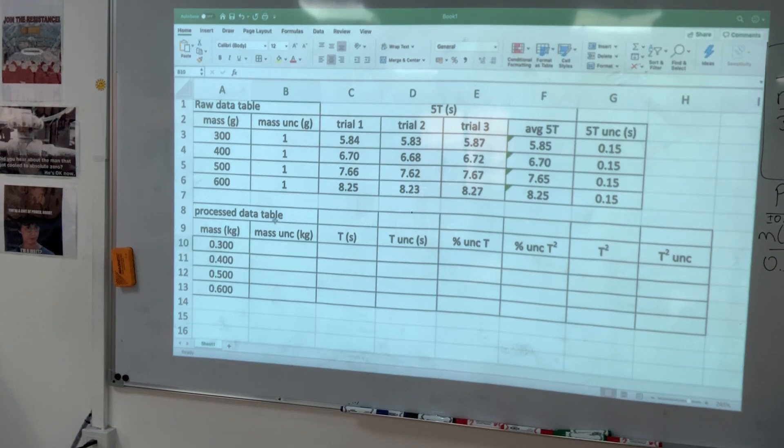Mass uncertainty: I'm going to take that number. Equation sign, select the number, divided by 1,000, enter. Drag and drop.